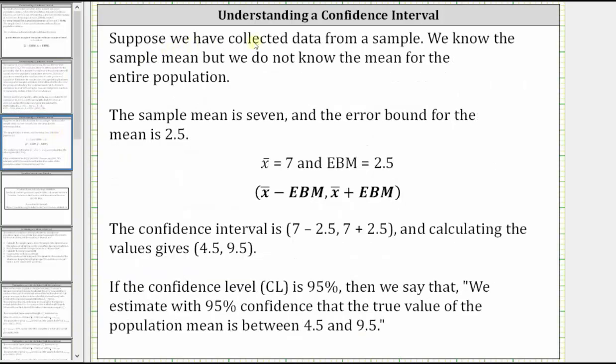As an example, suppose we have collected data from a sample. We know the sample mean but we do not know the mean for the entire population. The sample mean is seven, and the error bound for the mean is 2.5.